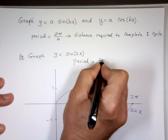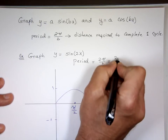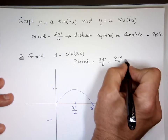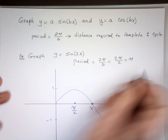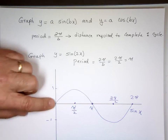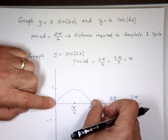The period is 2π divided by B. Here B equals 2, so this function will repeat itself every π radians. That means by the time you go from zero to π, you will have one full cycle.